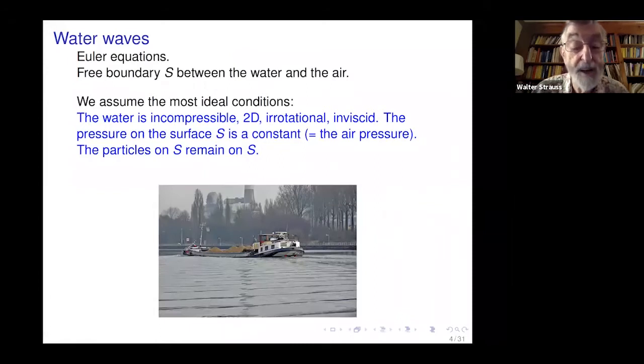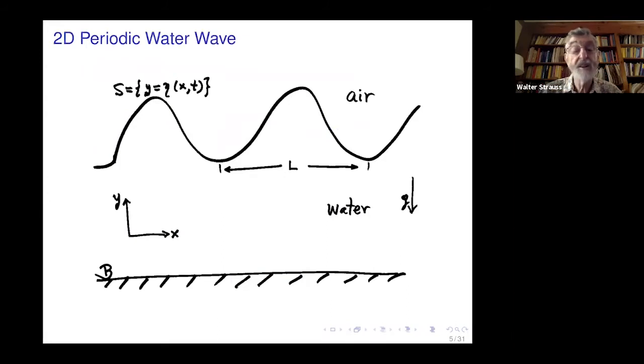Here's a picture of a two-dimensional water wave. We assume the water is incompressible, two-dimensional, irrotational and inviscid, described by the Euler equations. There is a free boundary between the water and air, which makes it interesting. We make two assumptions going back 200 years: the pressure on the surface equals air pressure (constant), and particles on the surface remain on the surface. Here's a sketch of a periodic wave with period L, gravity pointing downward, with surface given by function eta and flat bottom.